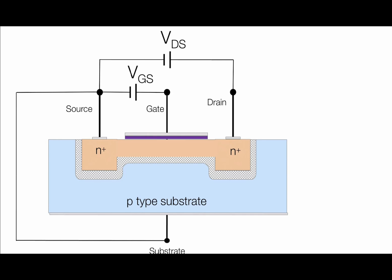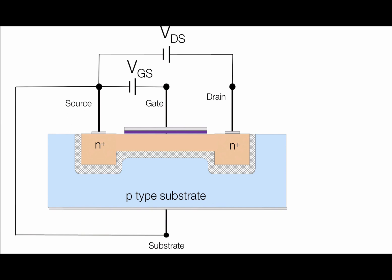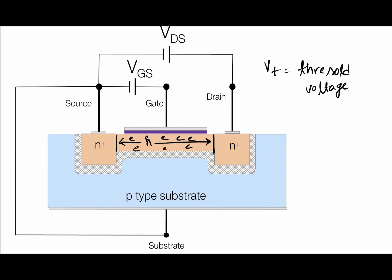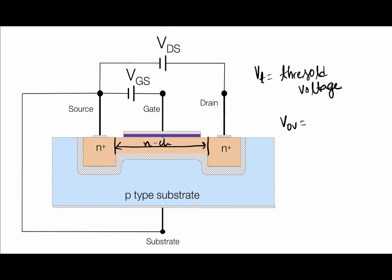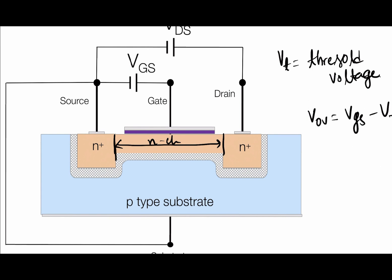In my last video I explained that if we apply a VGS on the gate side, then an N-channel is formed in the N-type enhancement MOSFET. The voltage needed to create this N-channel is called VT, the threshold voltage. The quantity of charge in this N-channel depends upon the excess VGS — the overdrive voltage, which is equal to VGS minus VT.